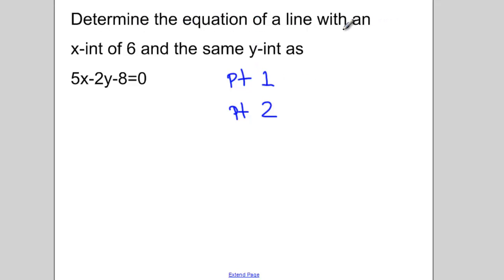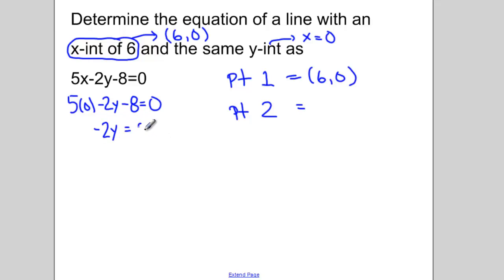I've been told that this equation has an x intercept of 6. So if I have an x intercept of 6 that means my point is the point 6 and 0. So point number 1 equals 6 and 0. Point number 2 is the same y intercept as the standard form equation. Y intercepts happen when x is equal to 0. So if I sub 0 in for x in my standard form equation and then solve for y, I end up with a y intercept of negative 4. So point number 2 is the point 0 and negative 4.